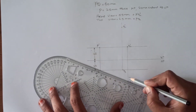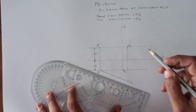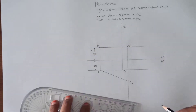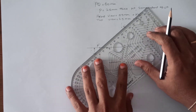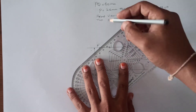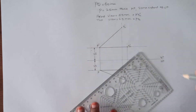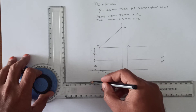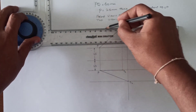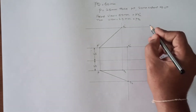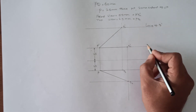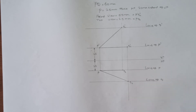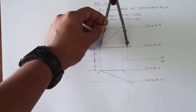Now connect point P' with Q2', and also connect P' with Q1'. Next, through the points Q1' and Q2', draw a line parallel to the reference line. We have now obtained the four locus lines: locus of Q', locus of P', locus of P, and locus of Q.